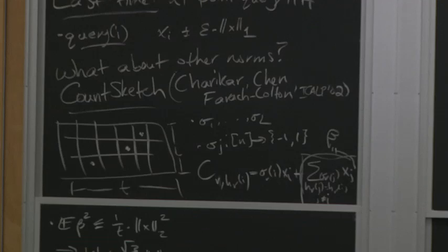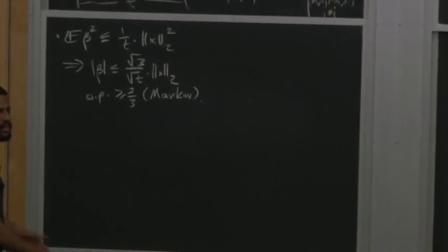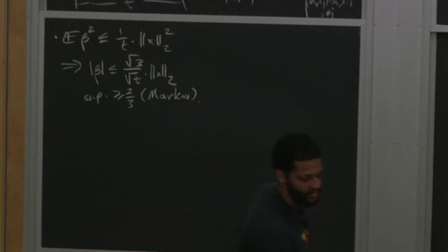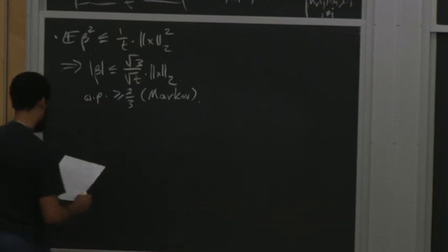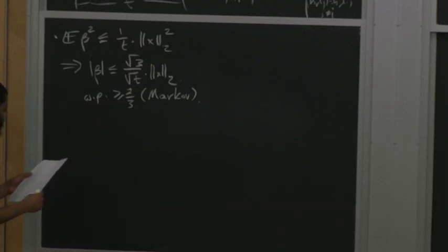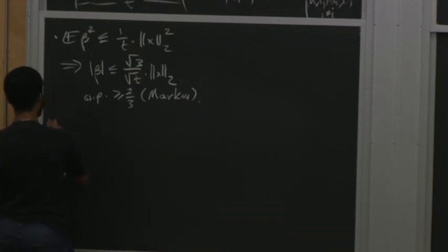Just like at the end of last lecture we looked at sparse recovery using the Count-Min Sketch, you can also do sparse approximation using the Count Sketch, and look at heavy hitters under L2, et cetera.